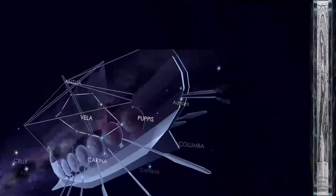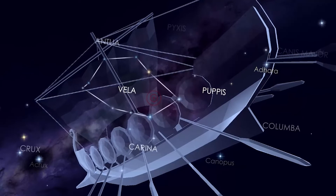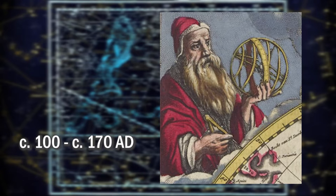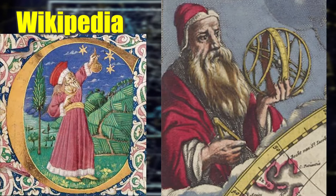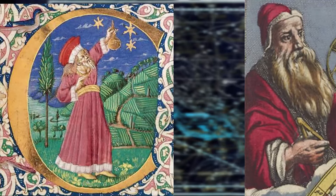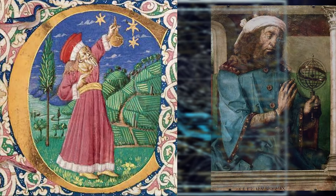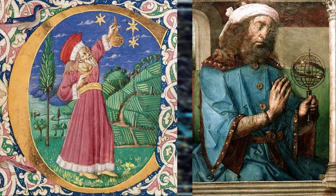Argo Navis is the only constellation from Ptolemy's original list of 48 constellations that is no longer officially recognised. Claudius Ptolemy (100–170 CE) lived in Alexandria, Egypt. He wrote in ancient Greek and can be shown to have utilised Babylonian astronomical data. He might have been a Roman citizen but was ethnically either a Greek or at least a Hellenised Egyptian under Greek rule. Ptolemy was a mathematician, astronomer, astrologer, geographer and music theorist, in the days when astrology and astronomy were not separate disciplines.